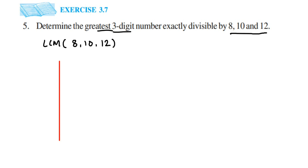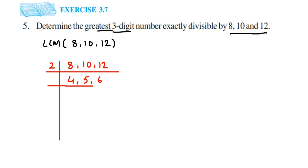The division method is like applying factorization. Make sure you try to divide all three numbers together with a single prime number. For example, 2 can divide all three: 2×4=8, 2×5=10, 2×6=12. Then take 2 again — it divides 4 and 6, giving 2 and 3, while 5 stays as is. Now we have 2, 5, and 3, which are all prime numbers that only divide by themselves.